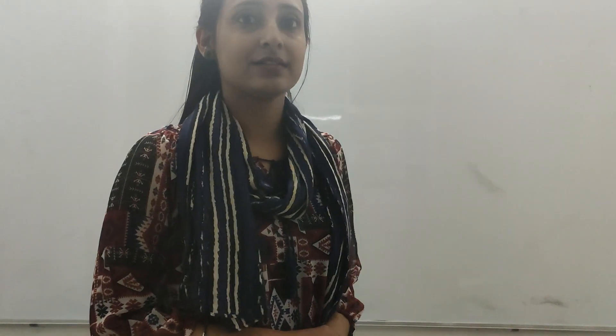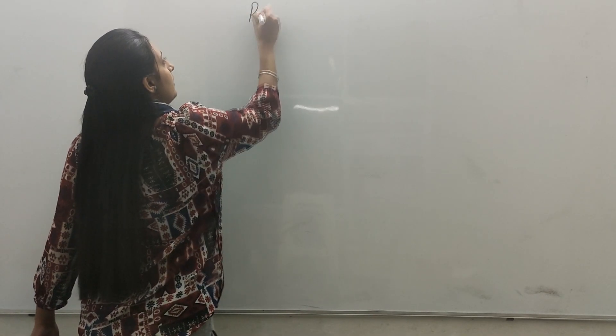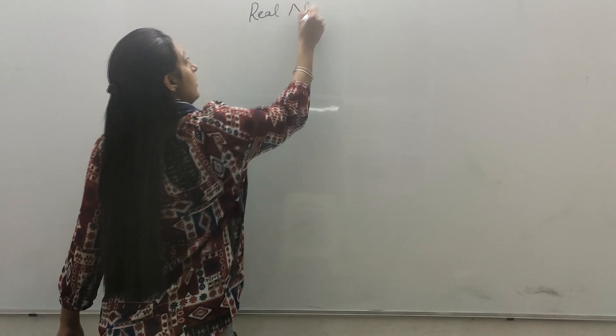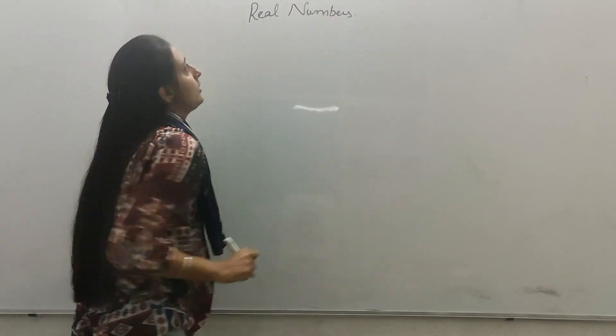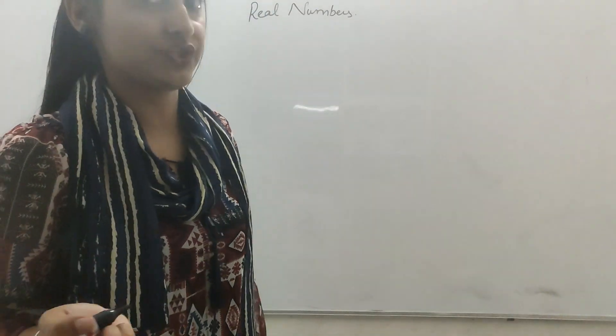Let's start chapter ten. First is real numbers. Real numbers are two types of numbers: rational numbers and irrational numbers.